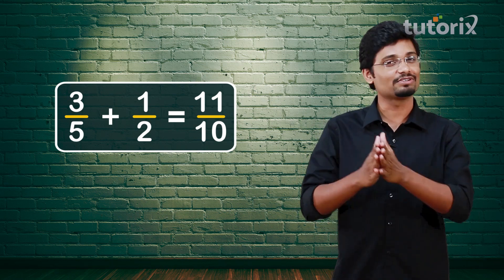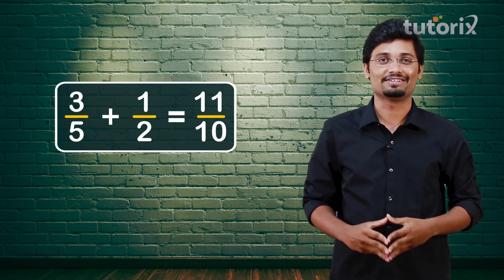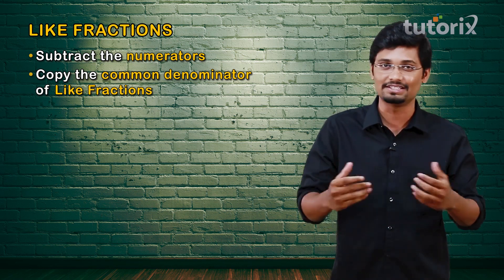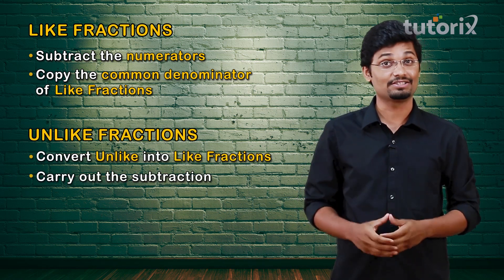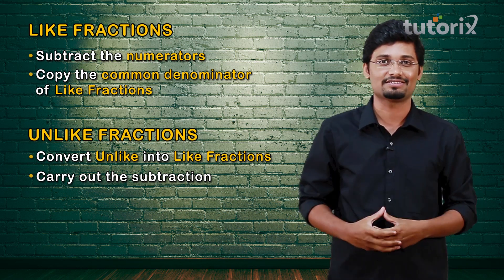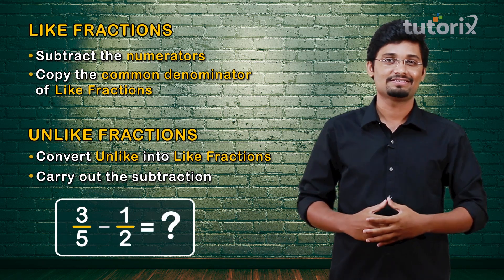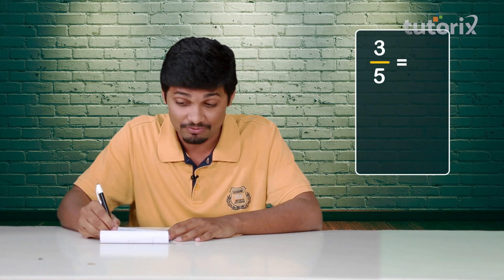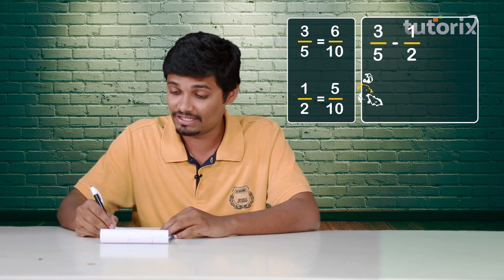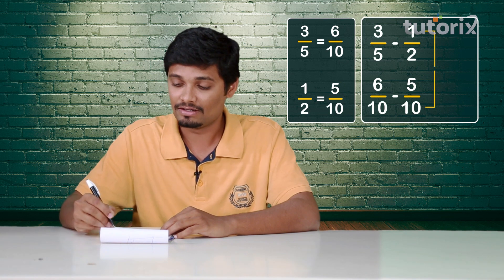Now you may also know how to subtract any two fractions — the method is exactly the same. If the fractions are like fractions, we directly subtract the numerators while keeping the common denominator unchanged. On the other hand, if the fractions are unlike fractions, we first convert unlike fractions into like fractions by taking the LCM of the denominators and then subtract the numerators. Now, can you subtract 1 by 2 from 3 by 5? It's easy! We first convert them to like fractions: 3 by 5 becomes 6 by 10 and 1 by 2 becomes 5 by 10. Then we carry out the subtraction. So 3 by 5 minus 1 by 2 is 6 by 10 minus 5 by 10, which is 1 by 10. Very nice! You have got it perfectly right!